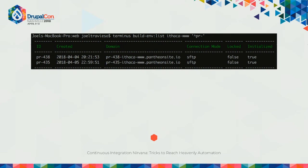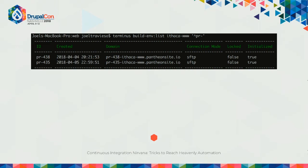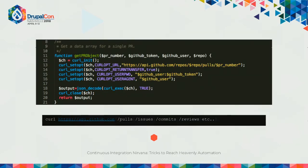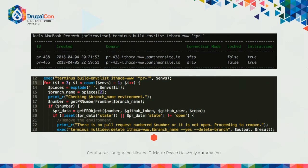We were able to tie each multi-dev to a particular pull request in GitHub. But we didn't know which pull requests were already closed or merged and which were still active. So we needed to communicate with the GitHub API. Our script executed the first command, parsed the output to get the ID of each pull request associated to each multi-dev, then queried the GitHub API to get full information about that pull request — including whether it was still open — and if closed, ran another Terminus command to delete the multi-dev.